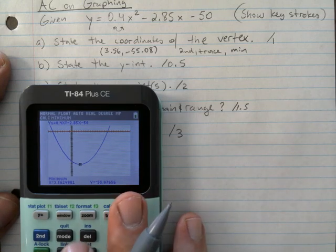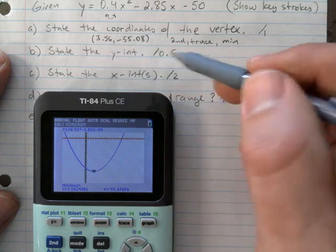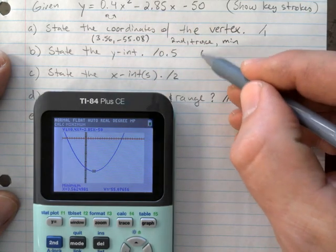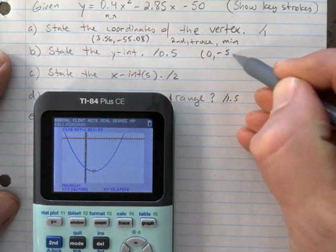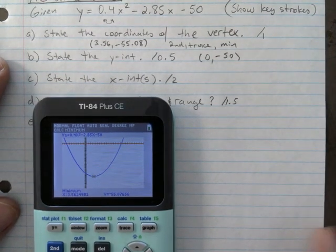Okay, so that'd be a half a mark off. The y-intercept—this is in general form. That's why I just gave you a half a mark for it, because you just stated it right straight from the general form. Boom. But you could use your calculator, sure, why not?